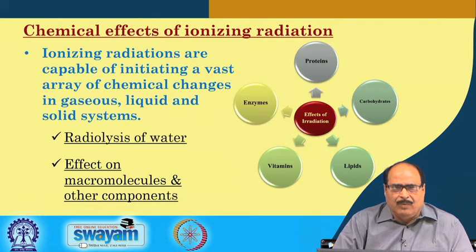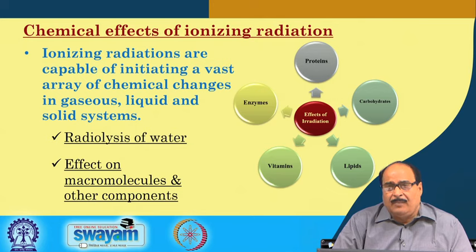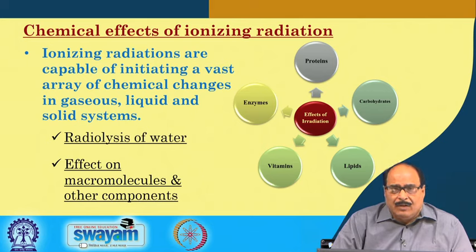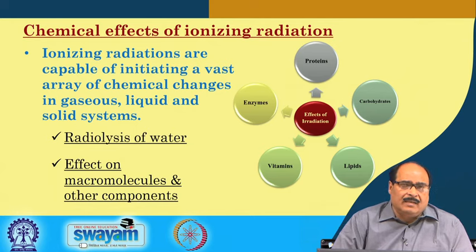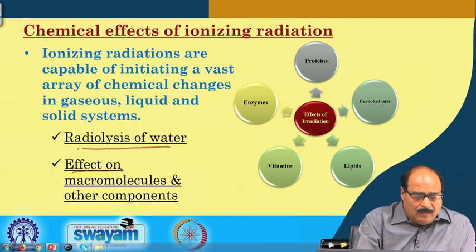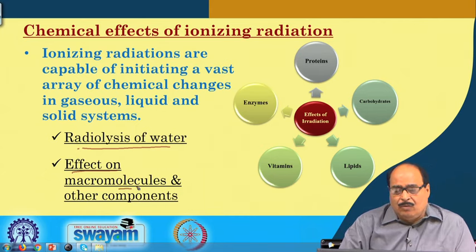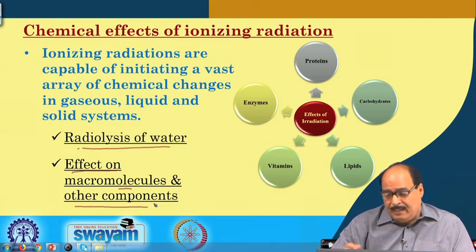Ionizing radiations are capable of initiating a vast array of chemical changes in all systems — gaseous, liquid, and solid. Even a summary of all these changes is very difficult in a half-hour lecture, but I will cover the important aspects particularly relating to food quality. There are two important considerations: one is the radiolysis of water, and the other is the effect of ionizing radiations on macromolecules like protein, carbohydrate, lipids, and other components like vitamins and enzymes.